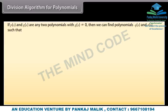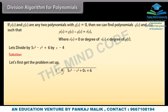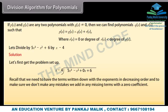If p(x) and g(x) are any two polynomials with g(x) not equal to 0, then we can find polynomials q(x) and r(x) such that p(x) equals g(x) into q(x) plus r(x), where r(x) equals 0 or the degree of r(x) is smaller than the degree of g(x). Let's divide 5x cubed minus x squared plus 6 by x minus 4. We need to have terms written with exponents in decreasing order.